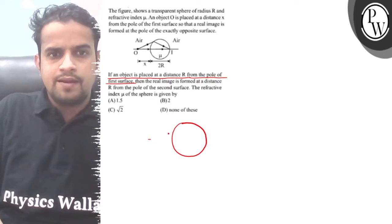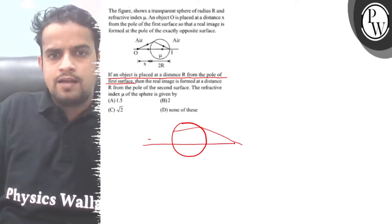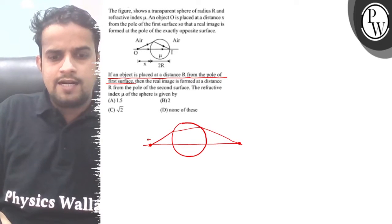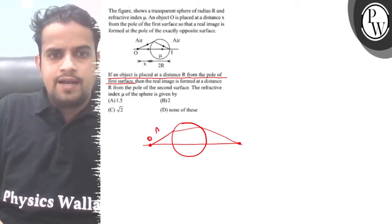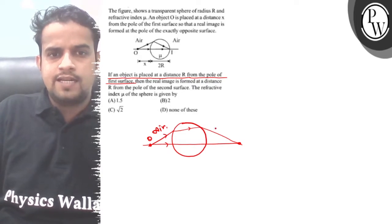We have the first surface here and the second surface here. The light rays are going from this side and refracting through the sphere this way.